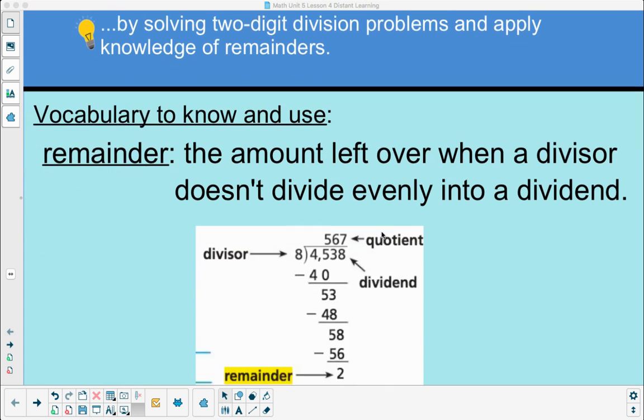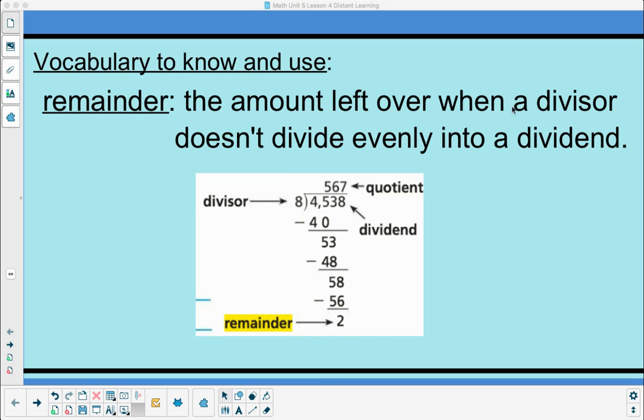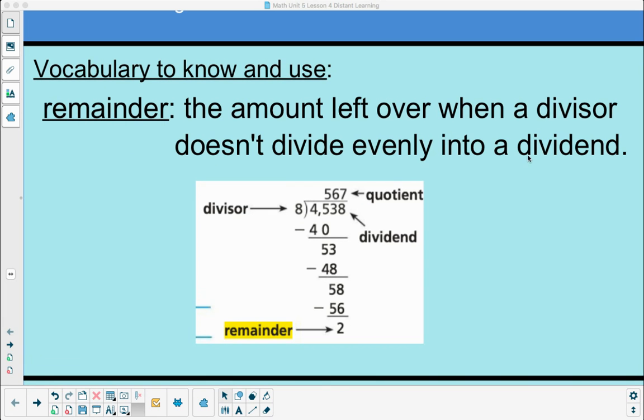As you know, the remainder is the amount left over when a divisor doesn't divide evenly into the dividend. We have the dividend, how much we have; the divisor, how many we're breaking it into; and our quotient is what we get. Our remainder is what's left that didn't quite fit into those groups.